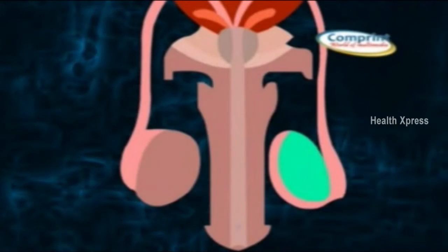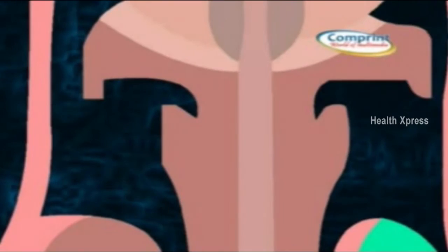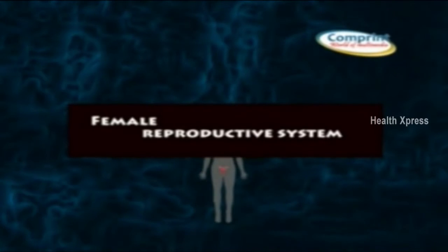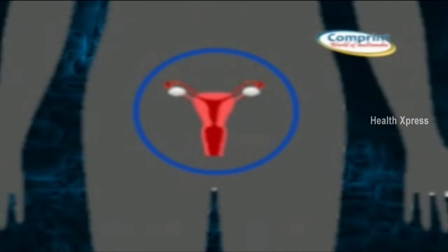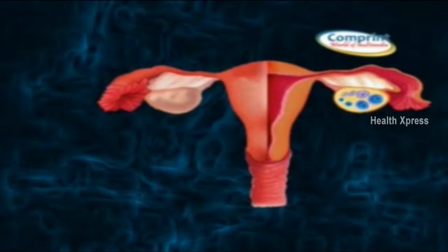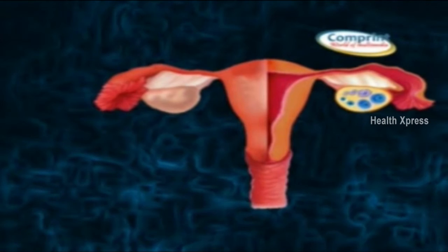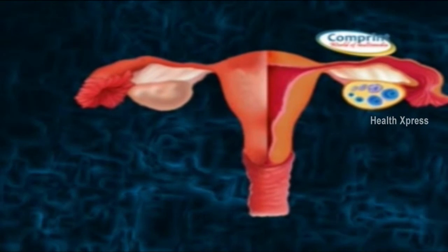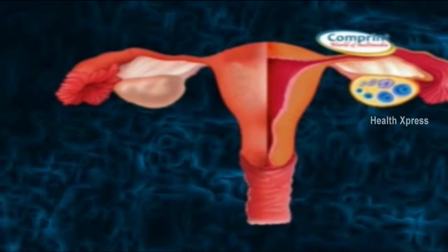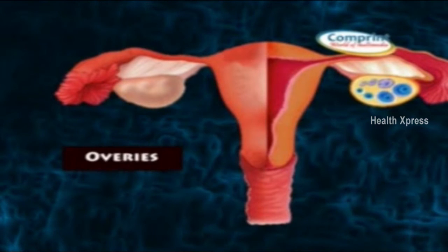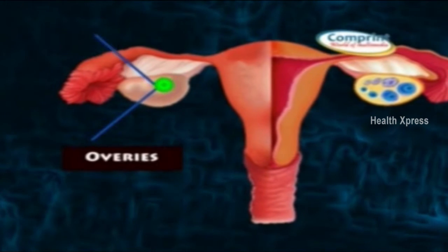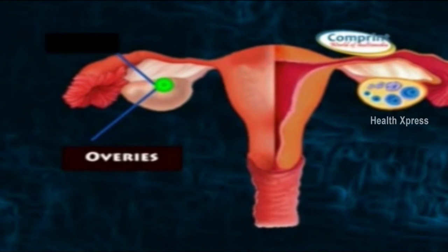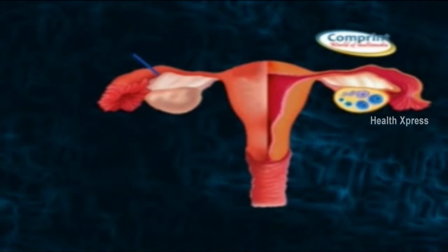The female reproductive system: the main parts are the ovaries. Ovaries produce eggs. When the ovum is released from the ovary, it passes through the fallopian tube, that is the oviduct, where it meets the sperm. When they meet together, the process of fusion starts and forms a zygote.